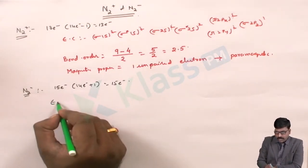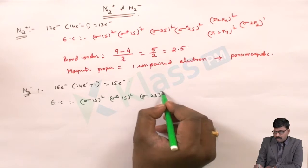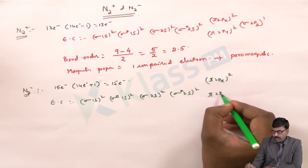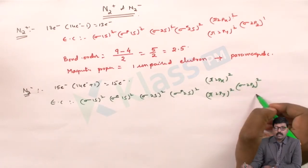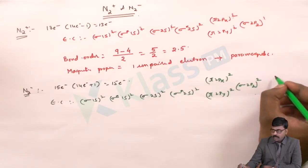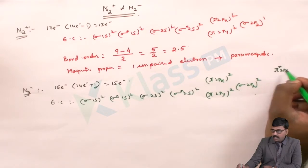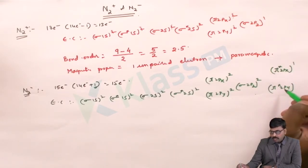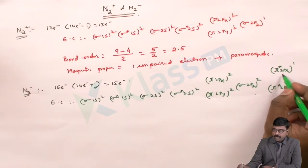The electronic configuration of N2 minus follows the nitrogen molecule configuration up to that point. The one extra electron goes to either pi star 2px or pi star 2py, as these two orbitals have the same energy level. In this case, the electron is placed in pi star 2px.